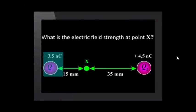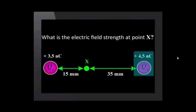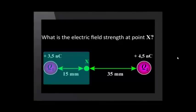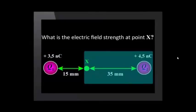We can also use this equation to calculate the strength of the electric field at a point due to a number of charges. Two charges, Q1 of positive 3.5 nanocoulombs and Q2 of positive 4.5 nanocoulombs are separated by a distance of 50 millimeters. What is the electric field strength at point X, which is 15 millimeters from Q1 and 35 millimeters from Q2? We do two separate calculations. We calculate the electric field strength at X due to Q1 and then calculate the electric field strength at X due to Q2.